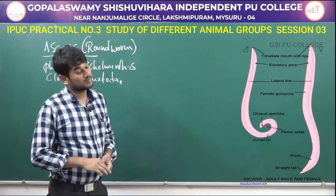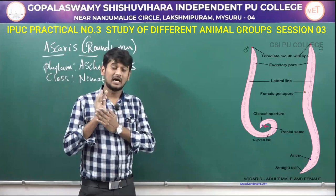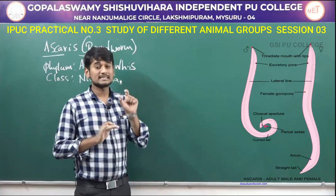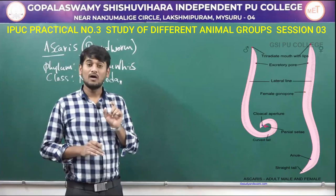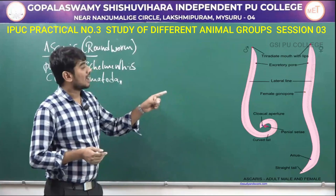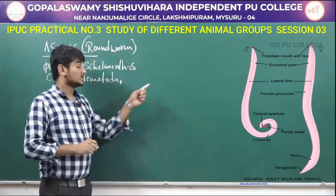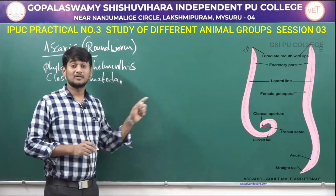The body is elongated and has tapering ends. The body has four longitudinal lines: one on the dorsal side, one on the ventral side, and the remaining two are lateral. The mouth is covered with three lips — one mid-dorsal and two ventrolateral. The excretory pore is ventrally placed just below the anterior end. The female is longer than the male, and the genital aperture is present mid-ventrally at one-third of the anterior end. The male has a curved tip with penial spicules close to the cloacal opening.